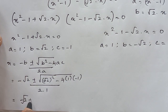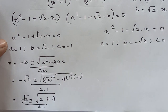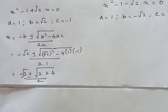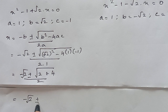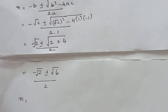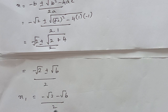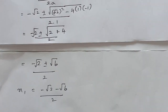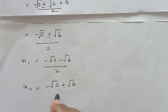That gives minus √2 plus or minus square root of 2 plus 4, all divided by 2, which equals minus √2 plus or minus √6, divided by 2. So x1 equals (minus √2 minus √6) divided by 2, and x2 equals (minus √2 plus √6) divided by 2.